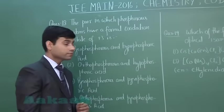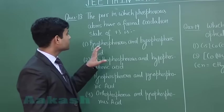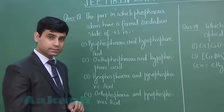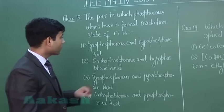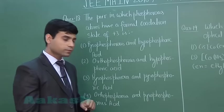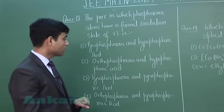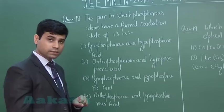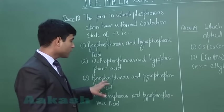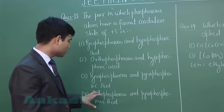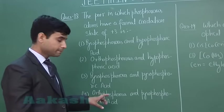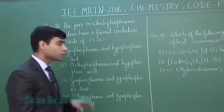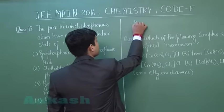The next question asks for the pair in which phosphorus atoms have a formal oxidation state of +3. The options are: (1) pyrophosphorus and hypophosphoric acid, (2) orthophosphorus and hypophosphoric acid, (3) pyrophosphorus and pyrophosphoric acid, and (4) orthophosphorus and pyrophosphorus acid. As we know, orthophosphorus acid is H₃PO₃.